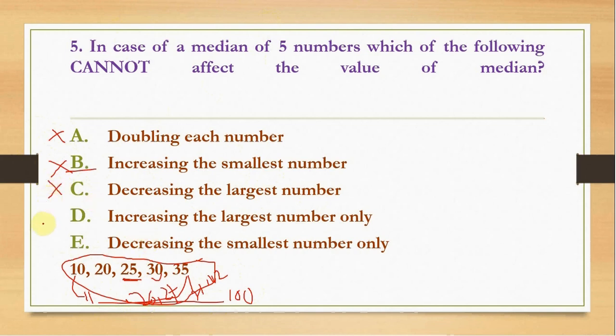Option D says that increasing the largest number only. So to whatever larger number you increase this 35, the median will not change in this case. So D is the correct answer. And sorry, I have missed one phrase here: select all that apply.